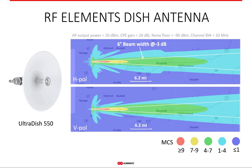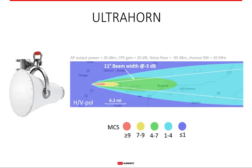The optimized design of the RF Elements Ultra Dish antenna really helps minimize side lobes to a large degree, but the physics of dish antennas dictate that side lobes are very hard to avoid completely. The Ultra Horn, on the other hand, has no side lobes whatsoever — just a single beam. It behaves similarly to the flashlight example, providing very clean coverage with no side lobes creating unwanted coverage areas. Moreover, its performance is identical in both polarizations, which is why there is only one plot.